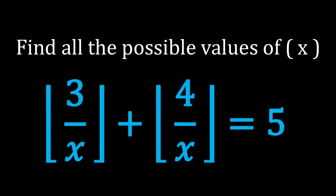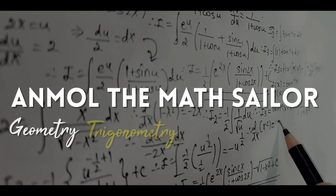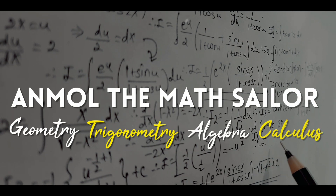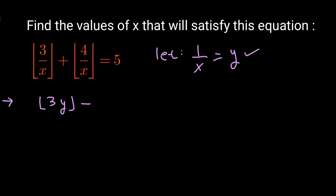Now let us start with the solution. The first thing we are going to do is get rid of the reciprocal of x. In order to do so, I will simply take the value of 1/x as some other variable y. Now let us substitute this value in the given equation, so the equation turns out to be floor(3y) + floor(4y) = 5.